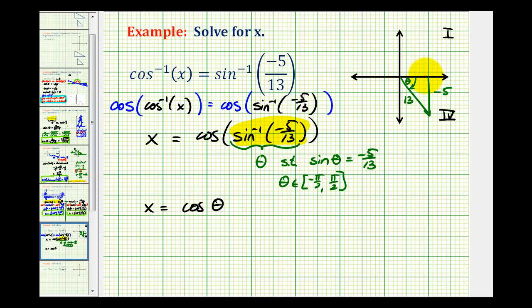We're missing the adjacent side of the reference triangle, so we'll use the Pythagorean theorem to determine this length. But if we know our Pythagorean triples, we know this is a 5-12-13 right triangle.